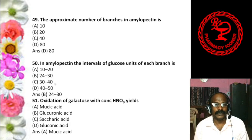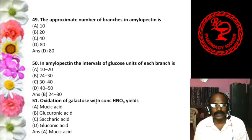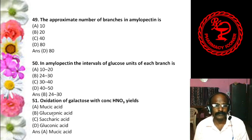Question 11: Osazones are not formed with — A. Lactose, B. Glucose, C. Fructose, D. Sucrose. The answer is sucrose. Osazones are formed with lactose (lactosazone), glucose (glucosazone), and fructose (fructosazone), but sucrose does not give a positive osazone test — it does not form those crystalline structures.